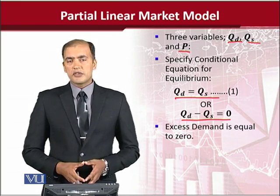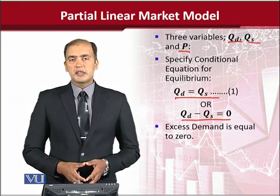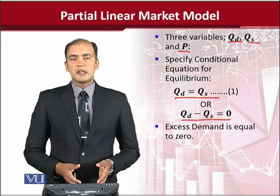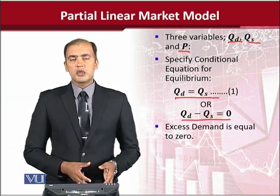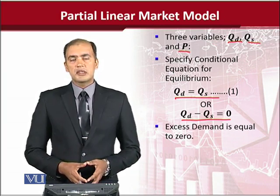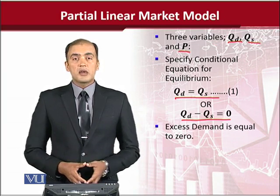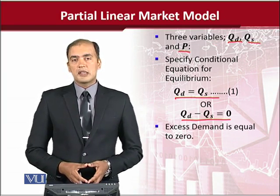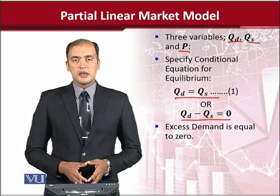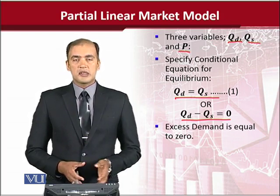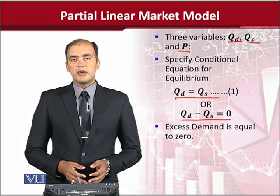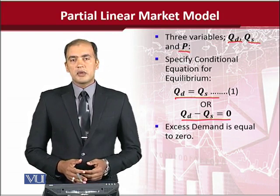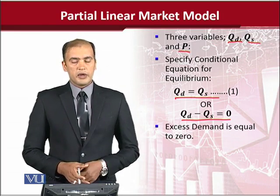By transferring QS to the left hand side, we get the expression QD minus QS equals zero. If this equals zero, it means that QD and QS are equal. In other words, there is no excess demand. This is the way we begin the development of the model.